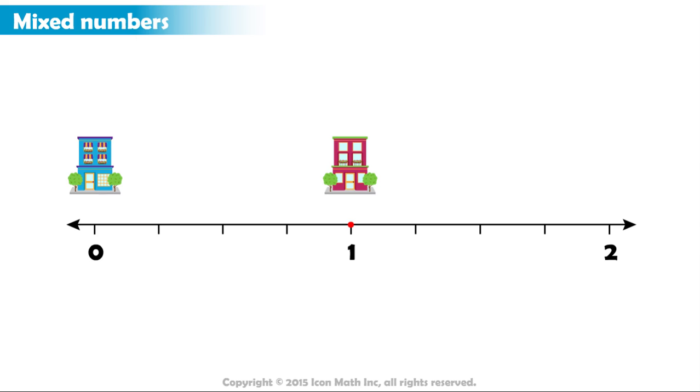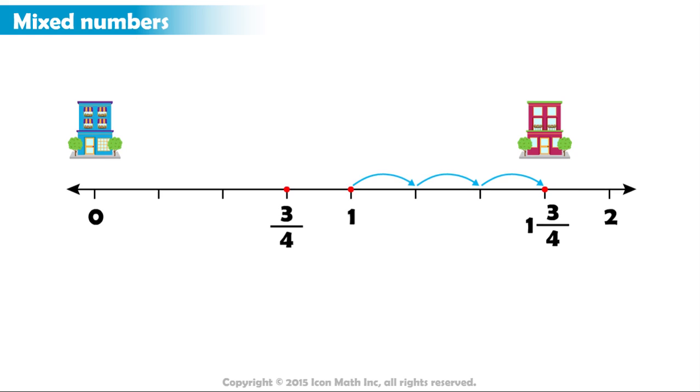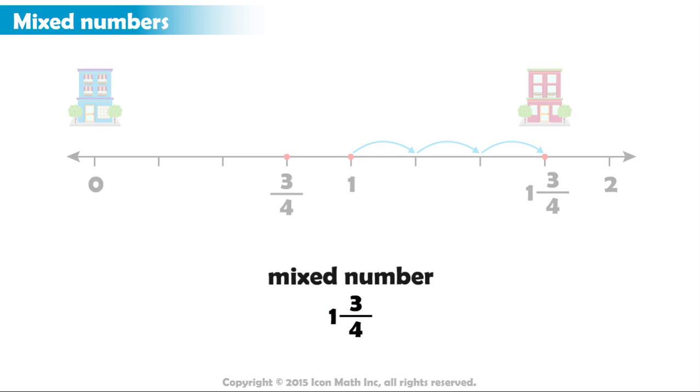What if it was up to this point? This point is three parts out of four after the whole number one, just like three-fourths. But because it follows one, not zero, it is represented by the addition of one and three-fourths. We drop the plus sign and just say one and three-fourths. This is called a mixed number. It is made up of a whole number and a fraction.